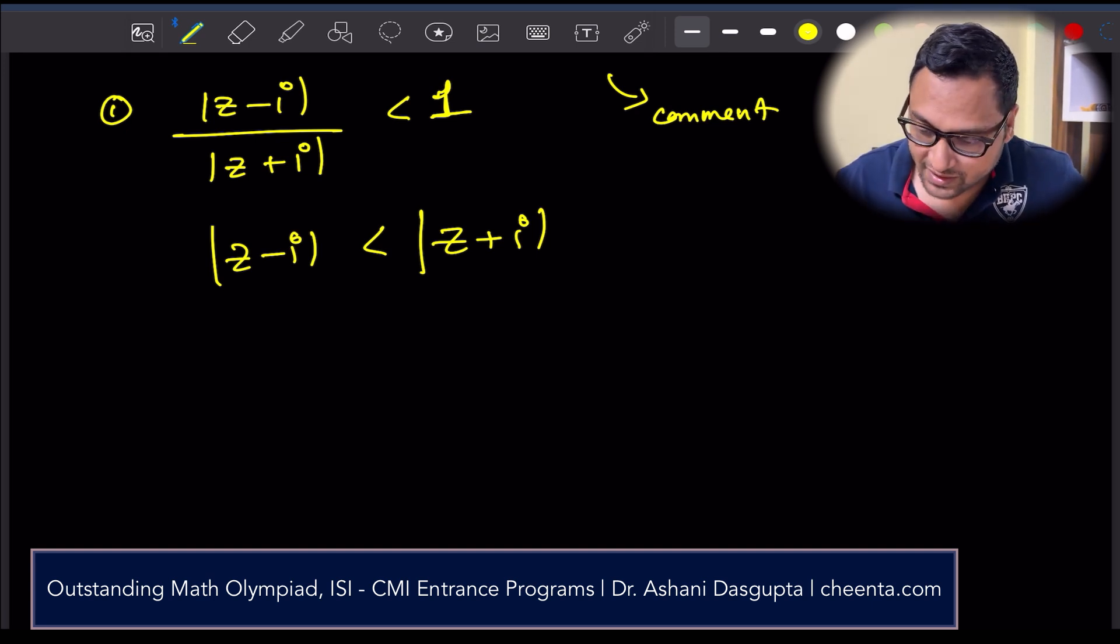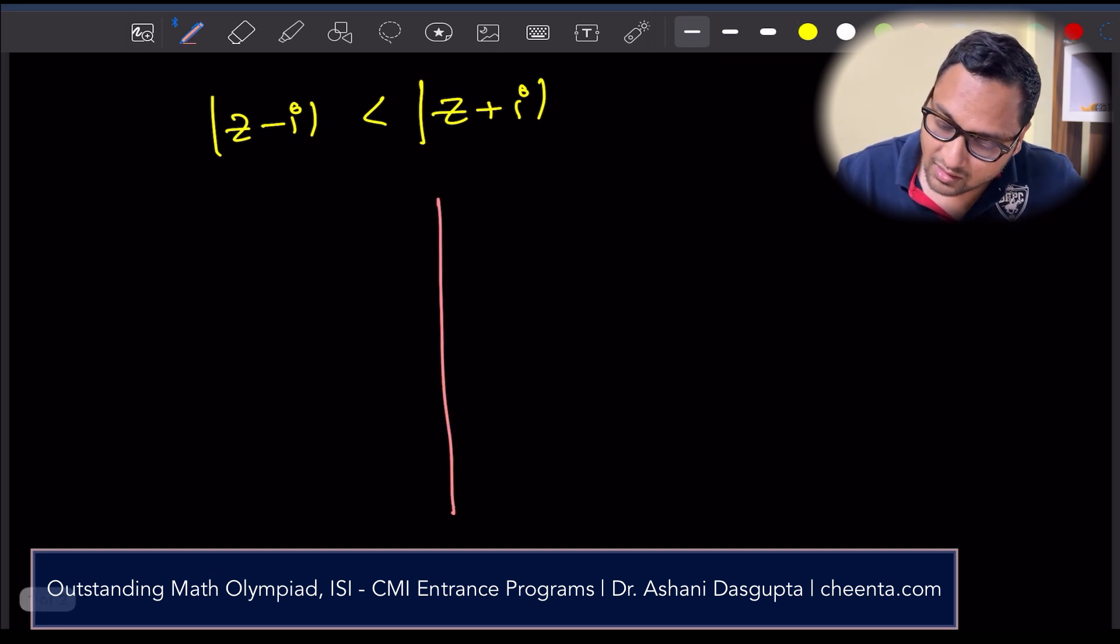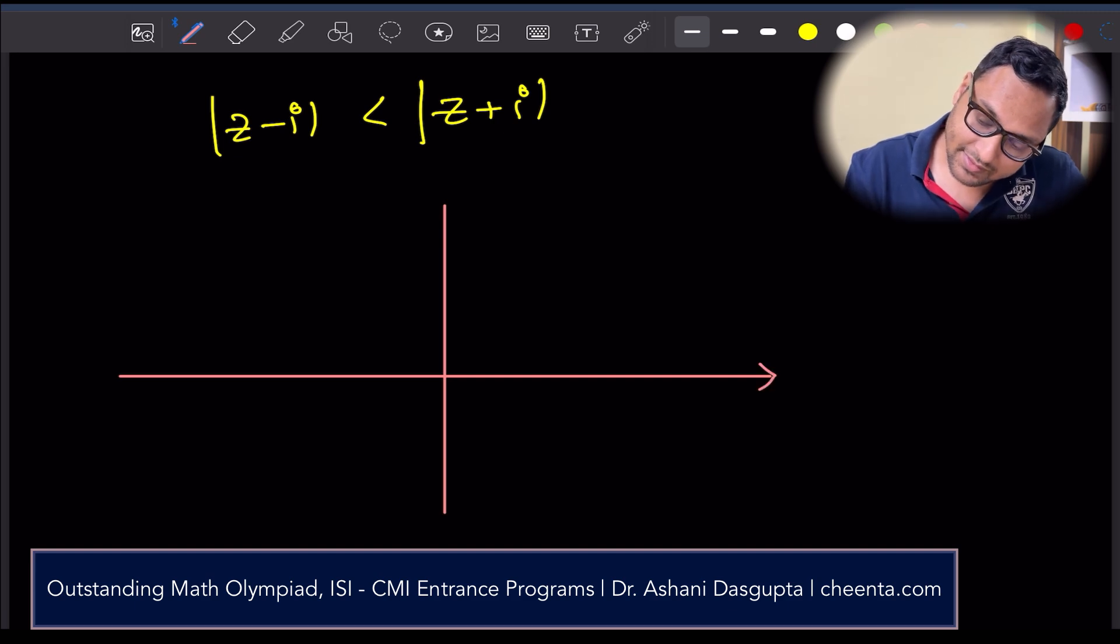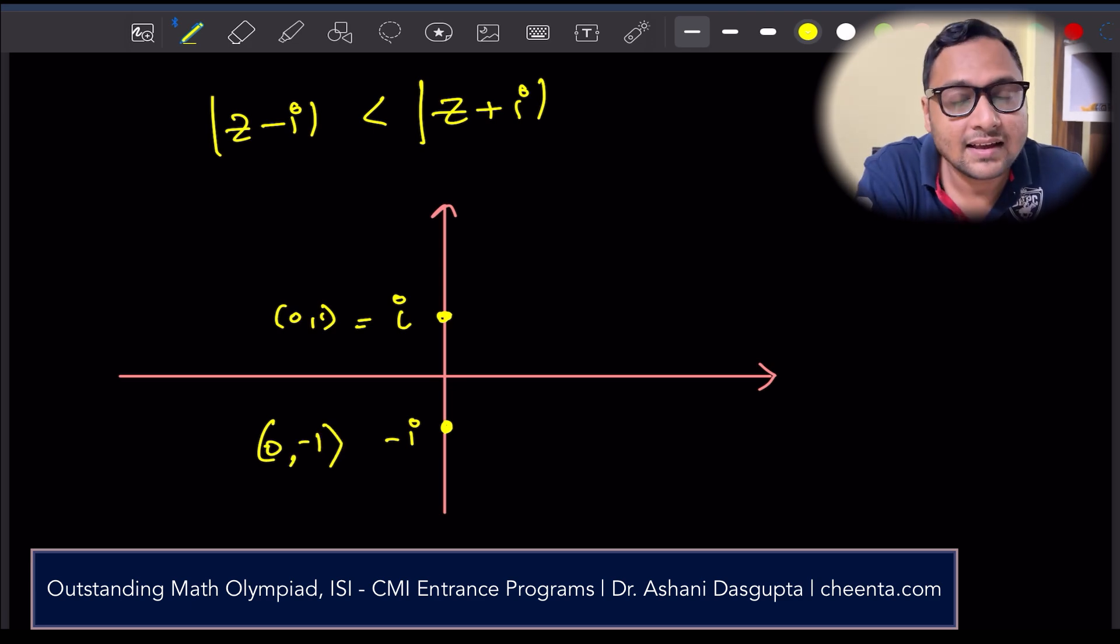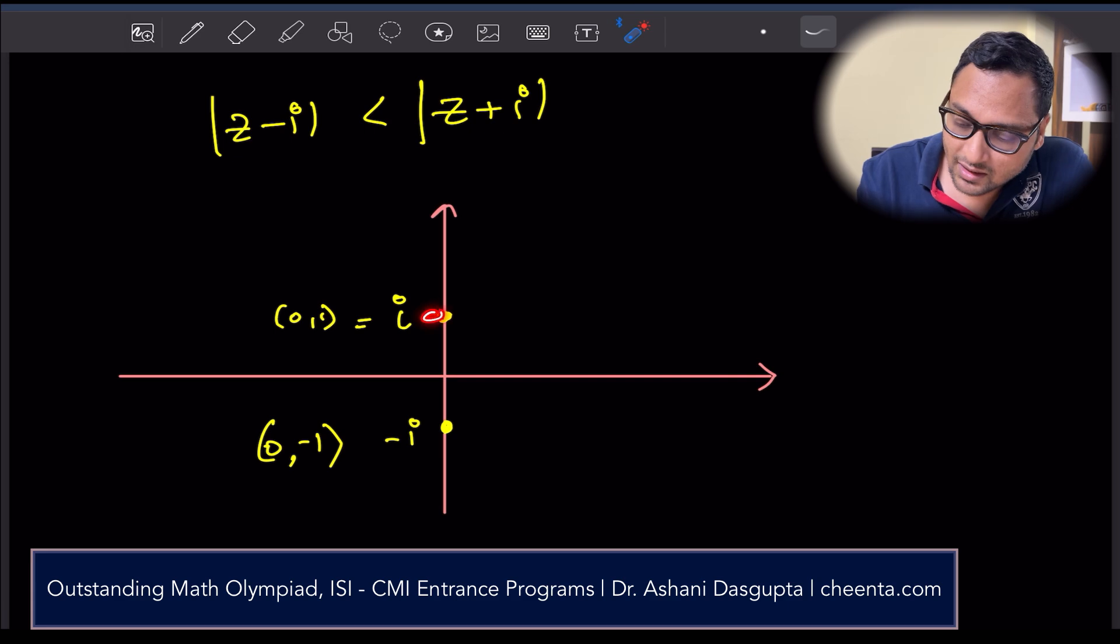Let's draw the picture. We have x-axis and y-axis. This point is i, which is essentially (0,1). This point is minus i, which is essentially (0,-1). It's very important to think about complex numbers as points in the x-y plane. It makes a lot of things simple. Complex multiplication is essentially rotation and dilation. We talk about this relationship of geometry and complex numbers in our Math Olympiad program and in our ISI-CMI entrance program in great detail. You can also look into the book Complex Numbers from A to Z by Titu Andreescu for more information on this. Let's come back to this particular point.